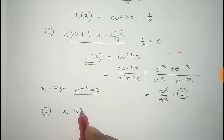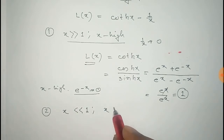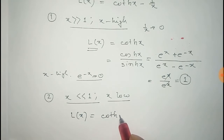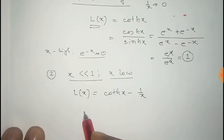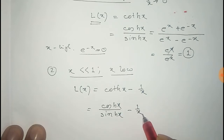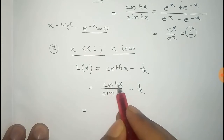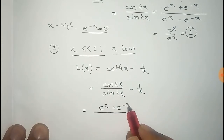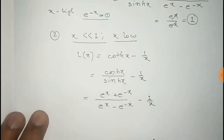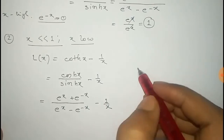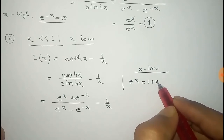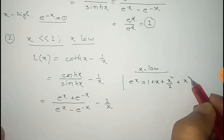The second case is X very, very less than 1 — that is, X is low. For that case, the function L(X) is given by coth(X) minus 1/X, where coth(X) can be written as cosh(X) divided by sinh(X), minus 1/X. For low X, e^X can be expanded as 1 + X + X²/2 + X³/6.